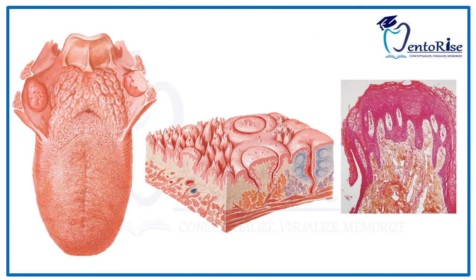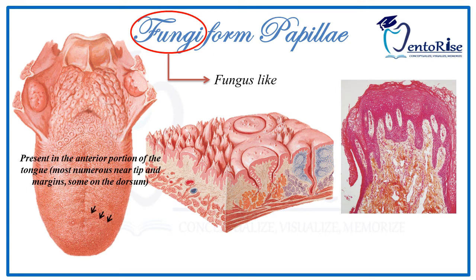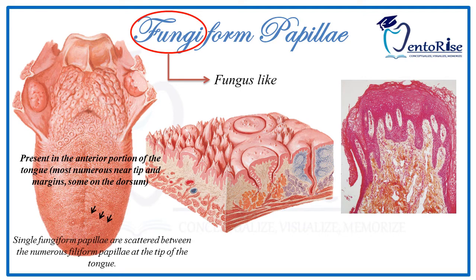Coming to the next type of papilla, which has a size intermediate between the circumvallate papilla and the filiform papilla — that is the fungiform papilla. Fungiform, as the name implies, means fungus-like. They are present on the anterior portion of the tongue, most numerous near the tip and the margins, with some present on the dorsum of the tongue as well. Single fungiform papillae are scattered between numerous filiform papillae at the tip of the tongue.